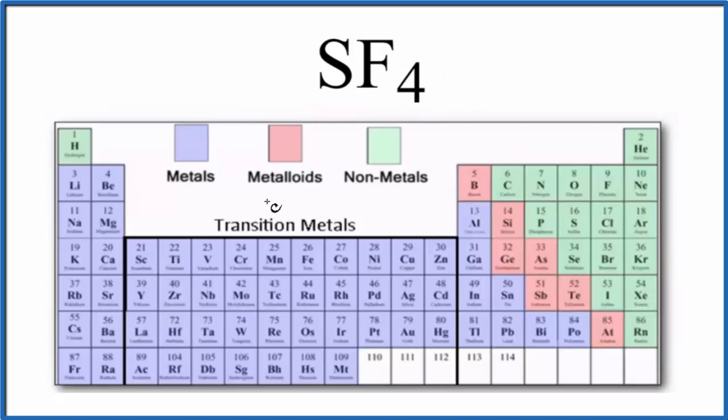So we have the periodic table and it's broken up into metals, metalloids, and non-metals. We find sulfur right here. Sulfur is a non-metal and then fluorine over here is also a non-metal.